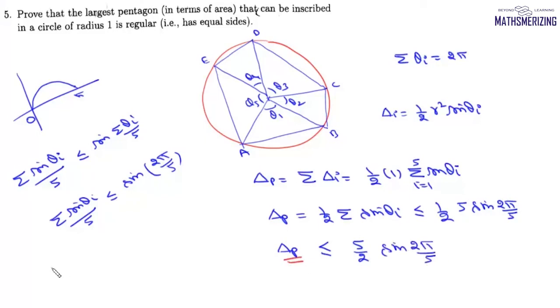Now we need maximum value of this area. So this area will be maximum when we have this equality sign, so maximum area will be five by two sine two pi by five and we'll get this equality when we have an equality here.